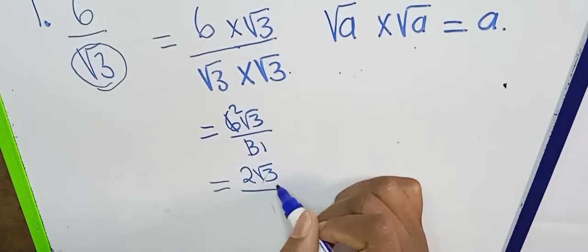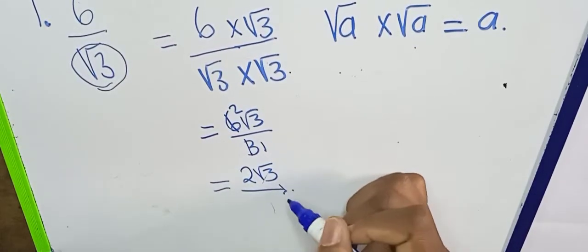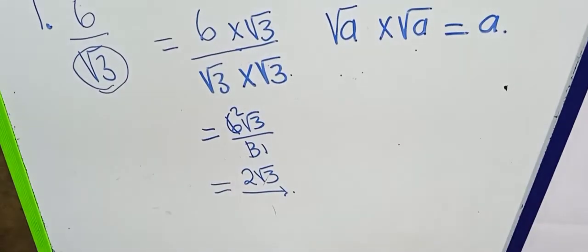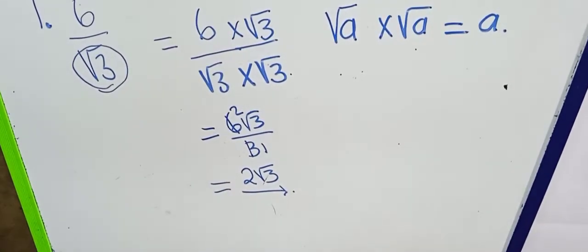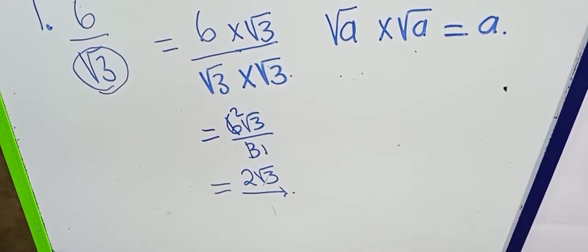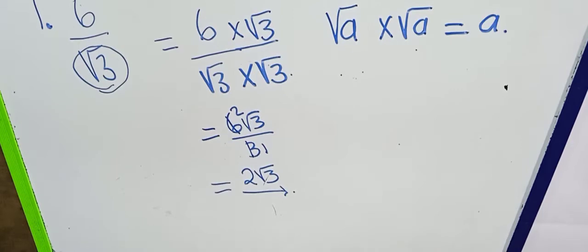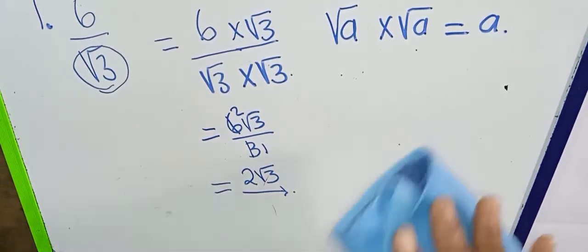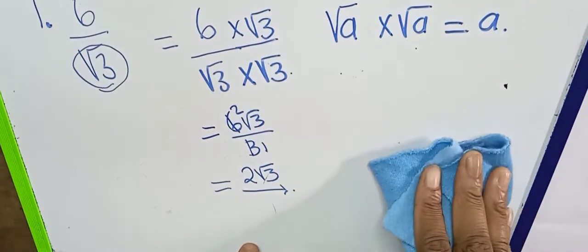So we have six root three over three, which we can simplify further. Three into three is one, three into six is two, so your answer is two root three. You cannot leave your answer as six over root three — that's mathematically wrong. You are required to rationalize. Rationalizing simply means getting rid of a surd number from the denominator.